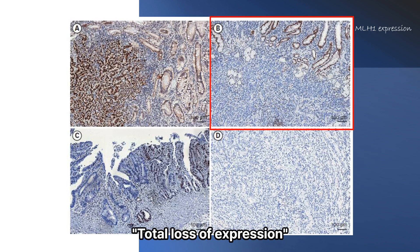Second, total loss of expression is a condition in which the nucleus of the surrounding tissue is well stained, but the nucleus of the tumor cell is not stained at all. Loss of MLH1 and PMS2, or MSH2 and MSH6, or loss of even one MSH6 or PMS2 was defined as MMR deficient.